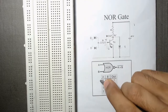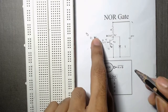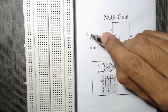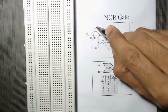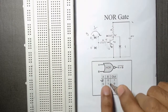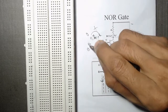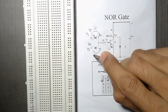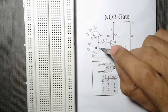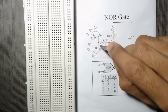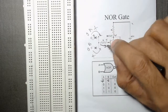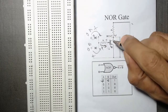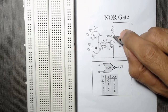When we apply zero at terminal A, this diode will be in reverse bias because this side is positive and this side is negative, so no current can flow. When B is also zero, this diode will also be in reverse bias, so current cannot flow through this either. Since there is no current, through the 1k resistor also current will not flow, so there is no base voltage.